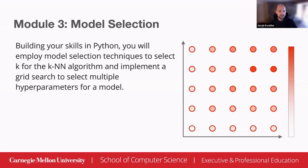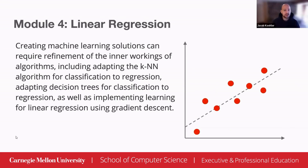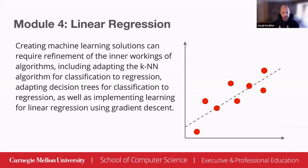After this, with module four, we start discussing a different kind of problem — linear regression — where we're building a model to predict a continuous value. We have some input along the horizontal axis, we want to predict the output value on the y-axis, and we build a straight-line model to do so. We can also use our earlier decision trees and k-nearest neighbors to solve regression problems, so at this point you'll have experienced three algorithms for this kind of problem.